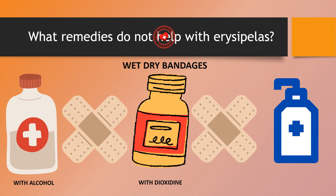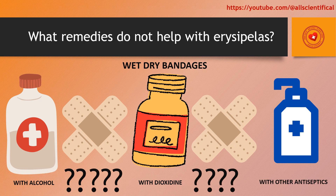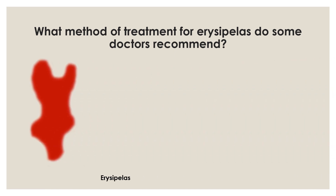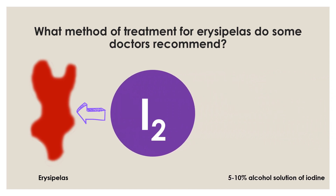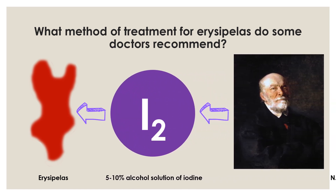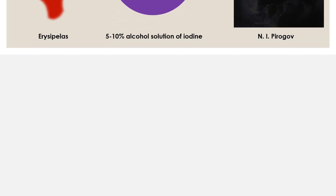What remedies do not help with erysipelas? The imposition of any ointment dressing should be recognized as harmful. The use of wet dressings with alcohol, dioxidine, and other antiseptics is unlikely to give a positive effect. To prevent the spread to healthy skin, some recommend edging the affected area with a 5–10% alcohol solution of iodine, a method recommended by Pirogov.